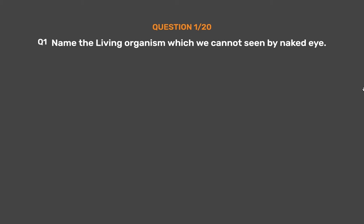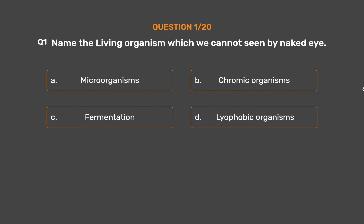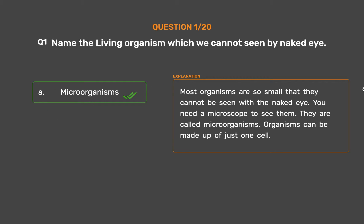Question number 1. Name the living organism which we cannot see with the naked eye. Option A: Microorganisms. Option B: Chromic organisms. Option C: Fermentation. Option D: Lyophobic organisms. The correct answer is Option A, Microorganisms. Most organisms are so small that they cannot be seen with the naked eye — you need a microscope to see them. They are called microorganisms.